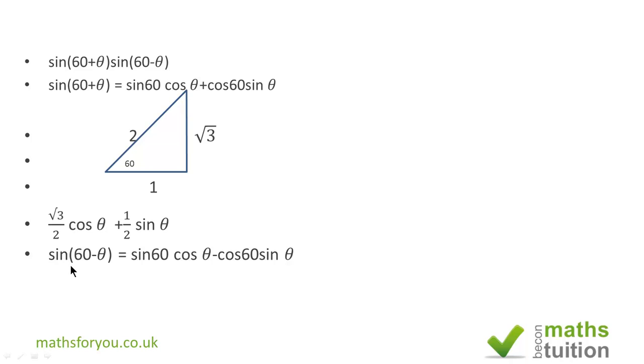So similarly, if we want to expand sin(60-θ), we have sin 60 cos θ - cos 60 sin θ, which then becomes √3/2 cos θ - 1/2 sin θ.